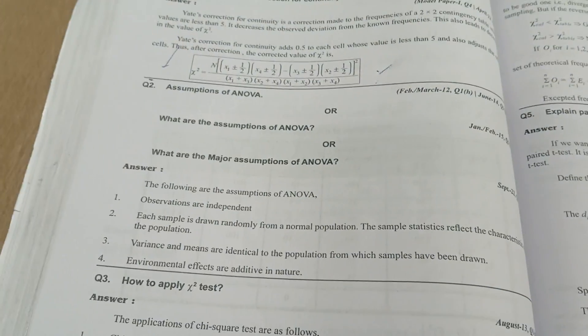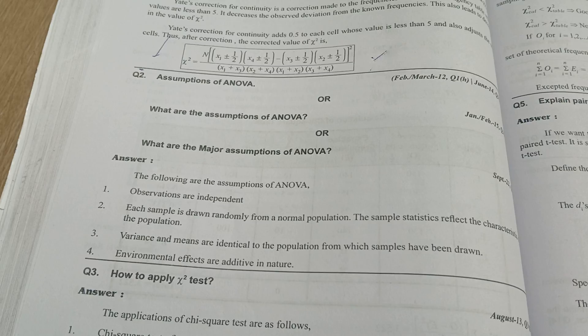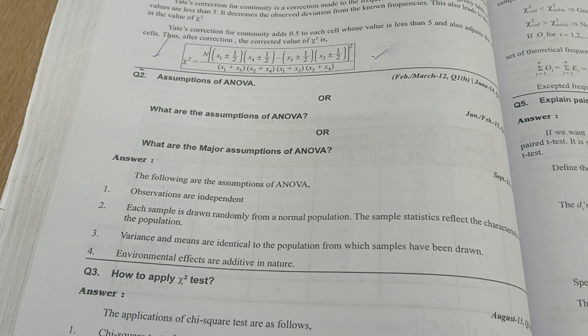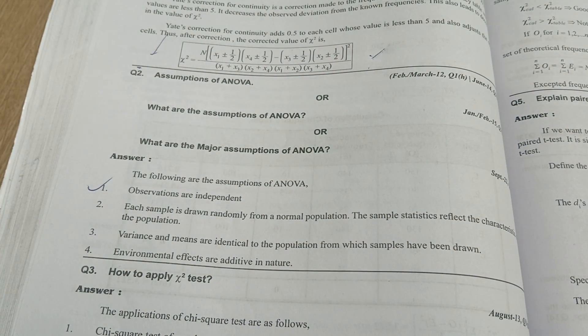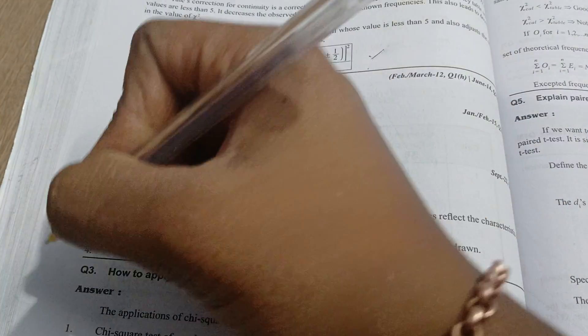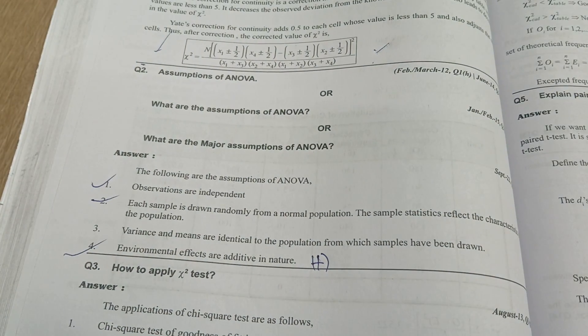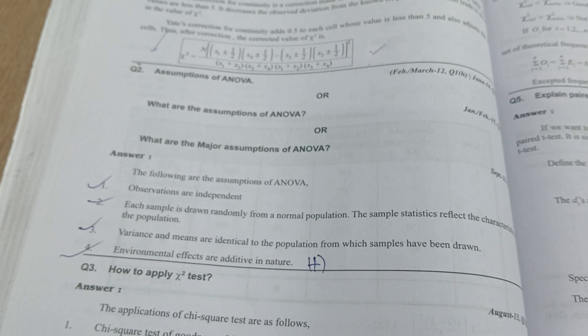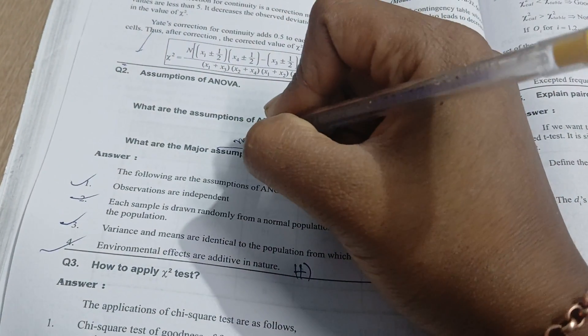Next is assumptions of ANOVA. The observations are independent in nature. Each sample is drawn randomly from a normal population and it is additive in nature, meaning variants and means are two different things drawn into a single thing. These are the various assumptions, the rules you need to follow.